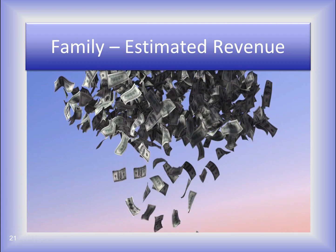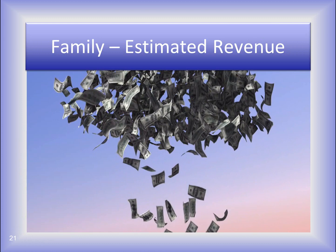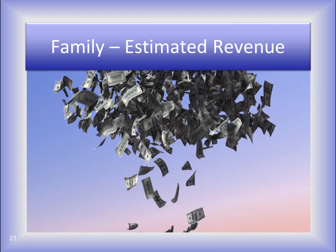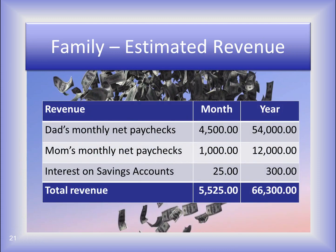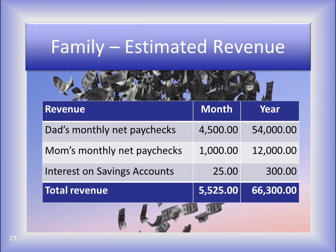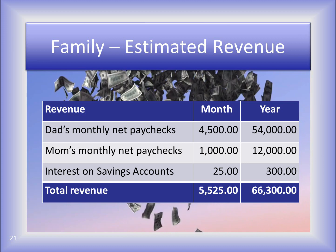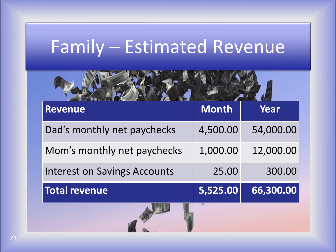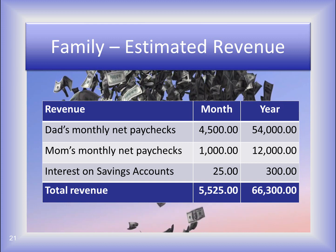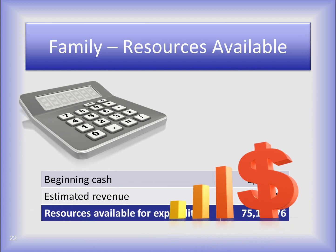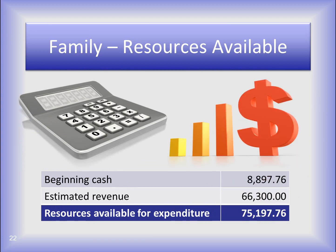Next, they estimate their annual revenue. The large cloud of money is their entire year of income — this money trickles into the family's bank accounts a little at a time throughout the year. So they take dad and mom's net paychecks, multiply them out to the annual estimate, and add estimated interest on their savings accounts. This gives them the estimated annual revenue of $66,300. We know they aren't going to have this money all at once. The family adds their cash and estimated annual revenue to determine their total resources available for expenditure: $75,197.76.